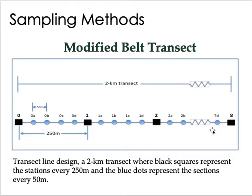Depending on the type of community being assessed, the sub-points allow you to continue sampling activities on the next day. The assessment today may cover from 0 to 0.08, which is 50 meters. These sub-points can function as replicates within your 2-kilometer sampling area, and can be considered as sub-replicates for statistical purposes.